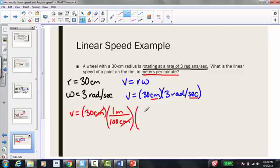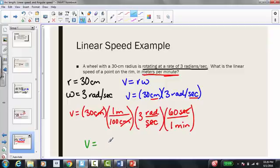And then for my angular speed, I have 3 radians per second, and it wants that in minutes. So again, I'm going to convert my seconds. So I have 60 seconds in 1 minute, making my seconds cancel out and then I would be left with radians per minute. Putting all of this into my calculator, I get that the linear speed is 54 meters per minute.